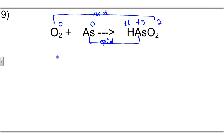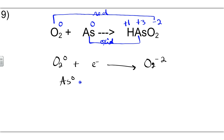Now we'll write our half-reactions. The electrons are added to the left because the 0 oxidation state is higher than a negative 2. The number of electrons transferred from 0 to negative 2 is 2 electrons times 2 oxygens, so that's 4 electrons transferred total.